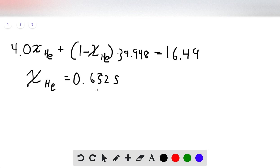Now that we have the mole fraction of helium, we can find the mole fraction of argon by taking 1 minus the mole fraction of helium, which gives us 0.3475.